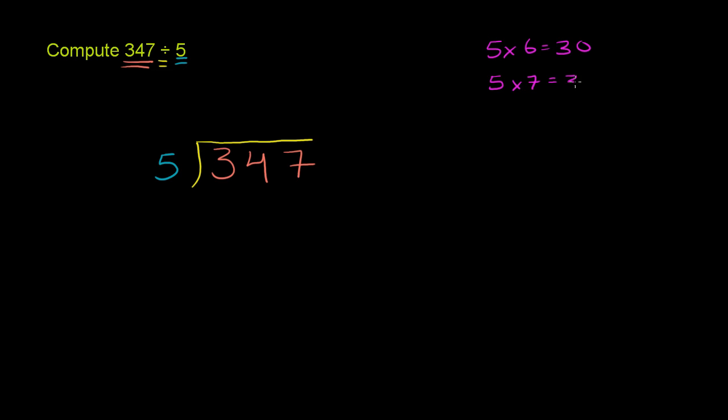so that's too big. So it goes into 34 six times. Because if we went with 7, we would've gotten 35. That's too big. So 5 goes into 34 six times. 6 times 5 is 30. We saw that right over there. And we subtract.